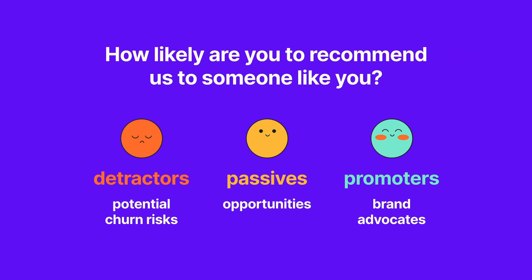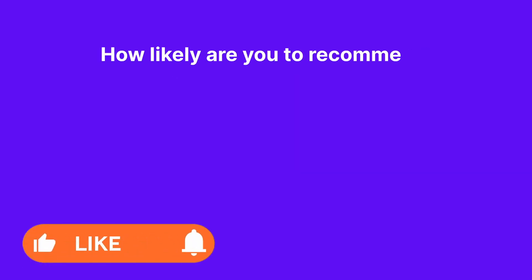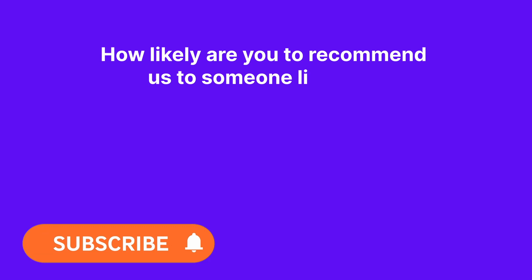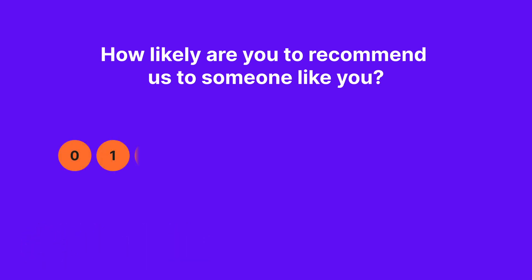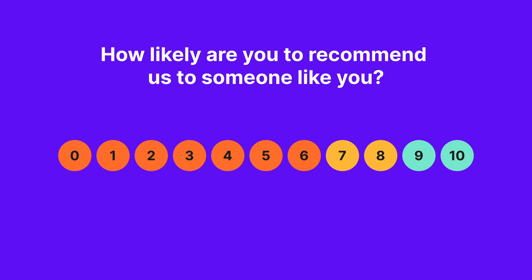But for now, let's dive straight into NPS calculation. The NPS survey asks: how likely are you to recommend this to a friend or colleague, or something similar? Answers are numbers on a scale ranging from 0 to 10. Respondents who choose 0 to 6 are detractors, those who choose 7 and 8 are passives, and 9 and 10 are promoters.